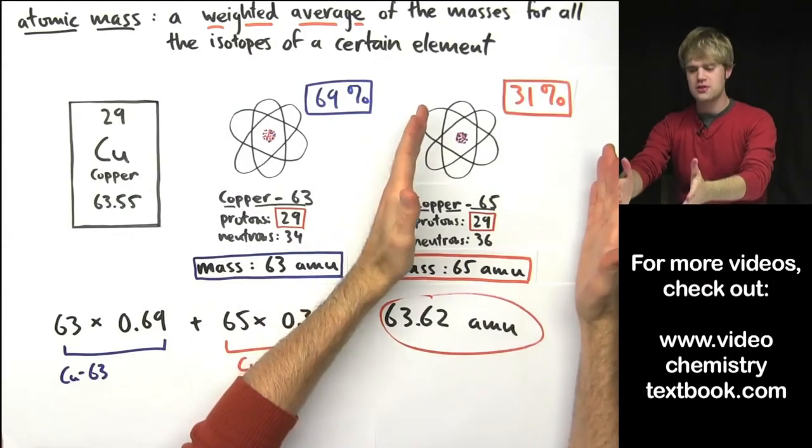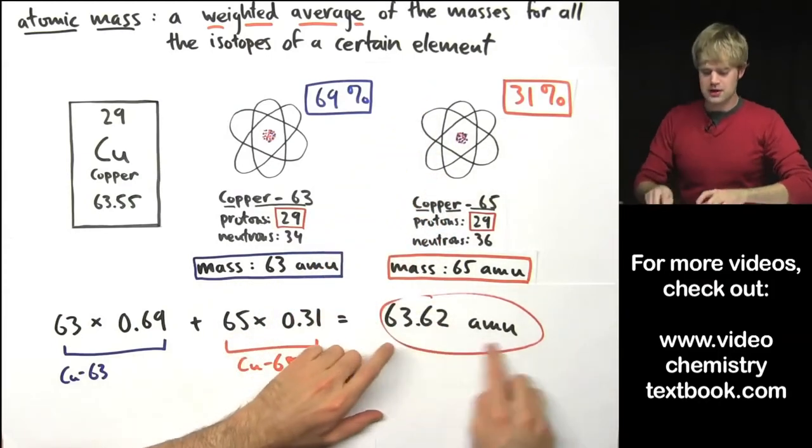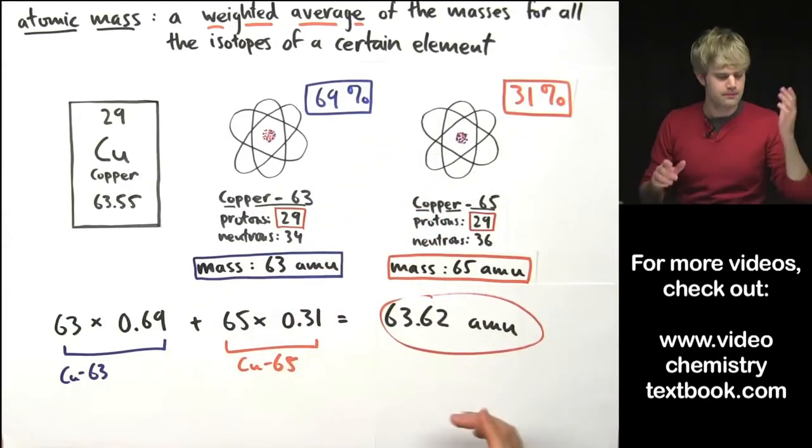We see a weighted average that is not 64 but is down closer to 63 because we have more of these. And the heavier copper-65's, they're not contributing as much to this weighted average.